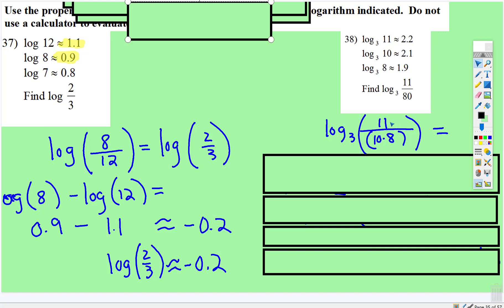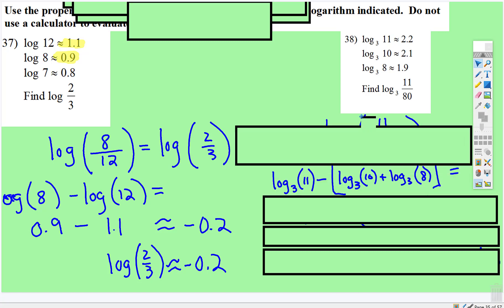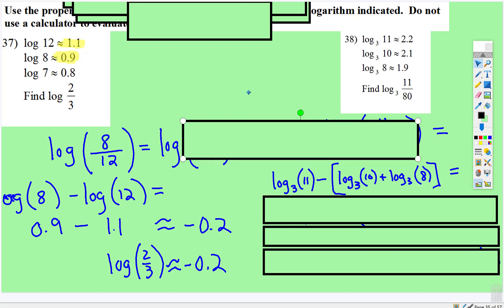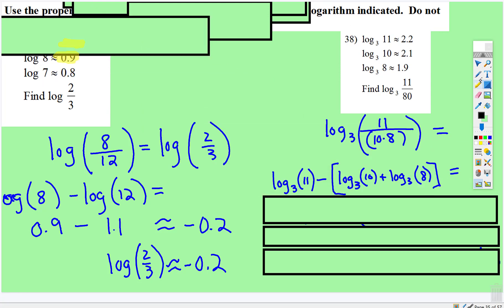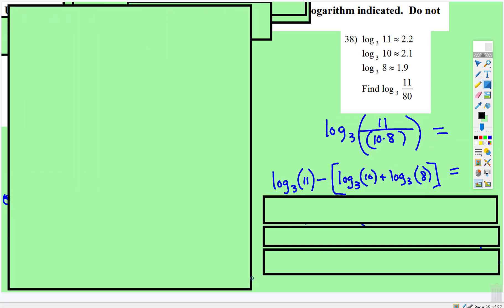Now we have a division and we have a multiplication. So when we expand, we have log base 3 of 11 subtract this phrase. Well, this phrase is addition. So we have log base 3 of 11, subtract, but because there's two things happening here, it's a phrase we're having to subtract. And in this phrase, multiplication expands to addition. So log base 3 of 10 plus log base 3 of 8.